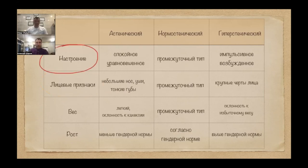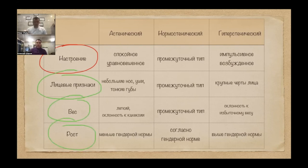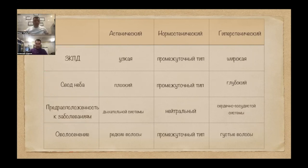Mood is not obvious — it depends on the calm or excited state. Facial features we cannot guess at all from constitution alone. We mentioned the adenoid face type and thin lips. Weight and height — patients are completely different: small, thin girls of 45 kg, tall ones. The attached gingiva zone — again, you mentioned muscle attachment points — that is also an individual factor. Palate vault — again, not an obvious point.